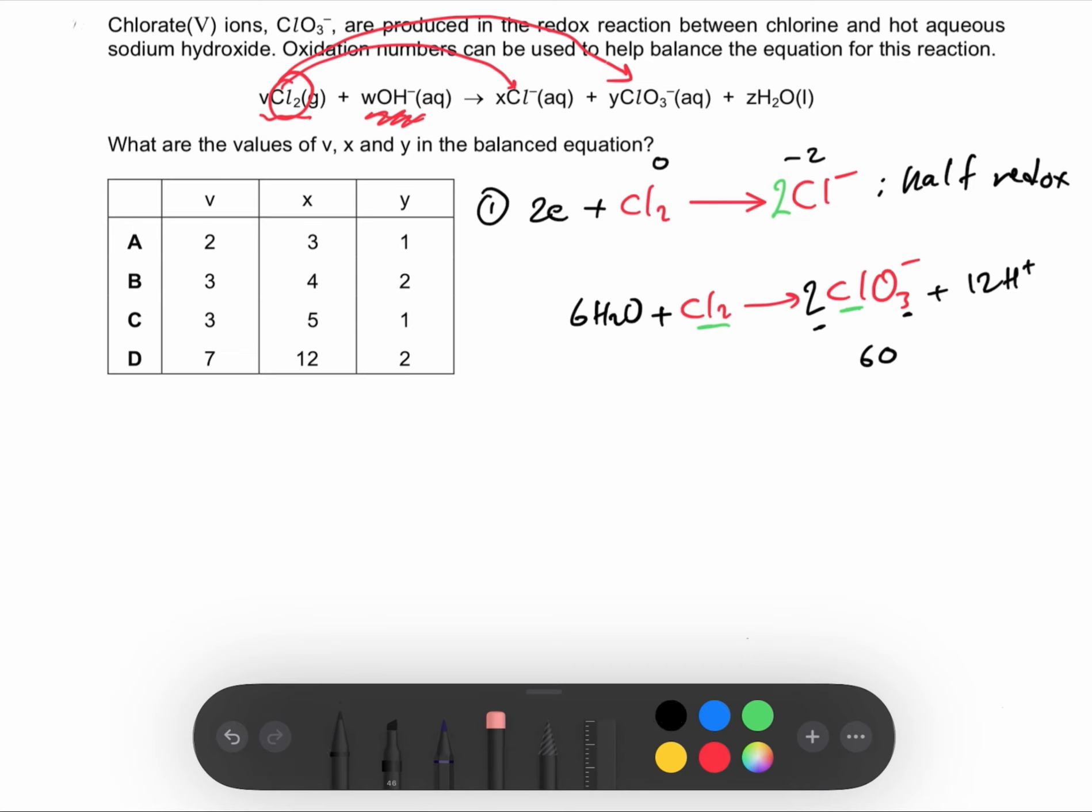At this point we can say we balance the number of atoms and now let's balance the charges. Since we have a +12 here and -2 there, the overall charge here is +10. Here it's zero, so we add electrons to the more positive term, and we have to add 10 electrons.